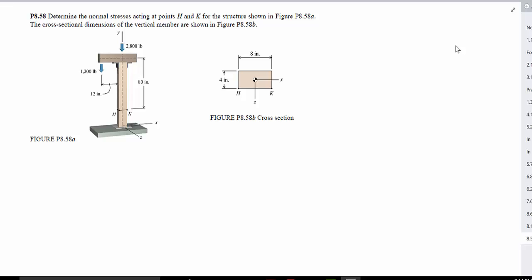Hello. Welcome to another practice problem. Today we're going to do problem 8.58 out of the textbook. This problem reads, determine the normal stresses acting at points H and K for the structure shown. The cross-sectional dimensions of the vertical member are shown here.